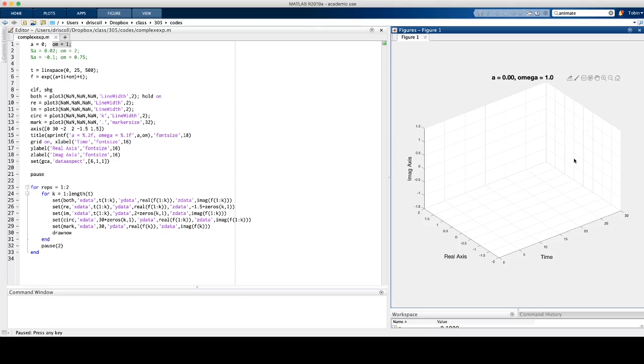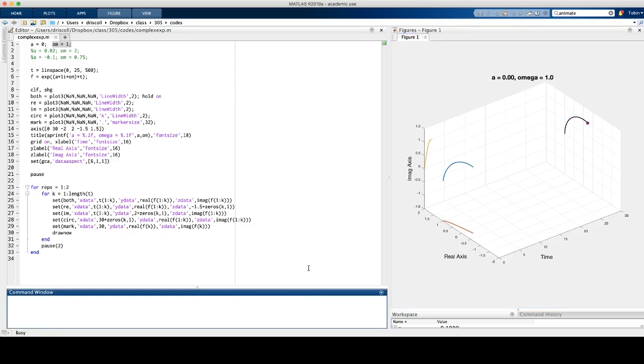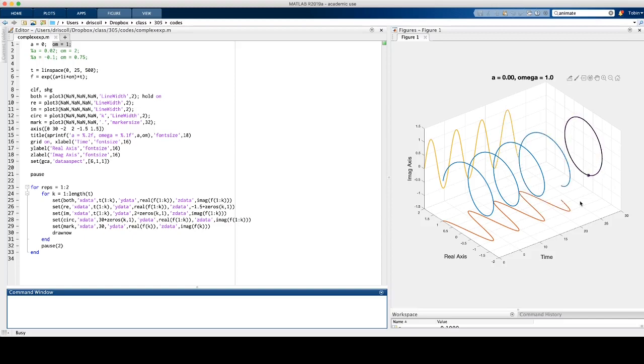And then this plane here is just real and imaginary, so this will be the complex plane parameterized by time. And you can see, since we have e to the zero t with the real part, the magnitude of the modulus doesn't change in time.